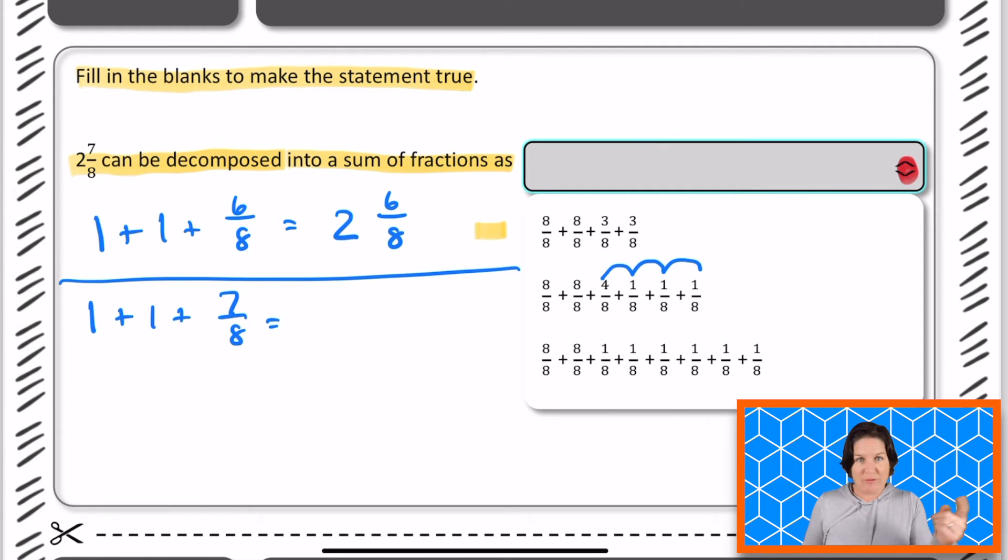We have two wholes. We have one plus one, that equals two. And then we have a fraction that is seven eighths. That's what we need. That's what we need. That's what our answer is going to be.